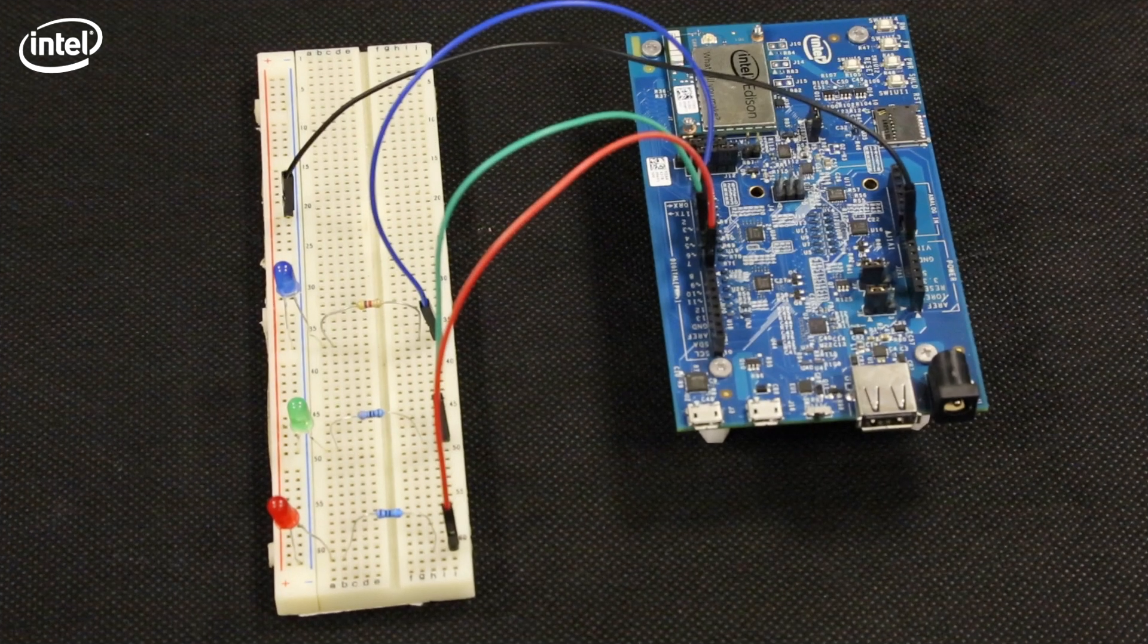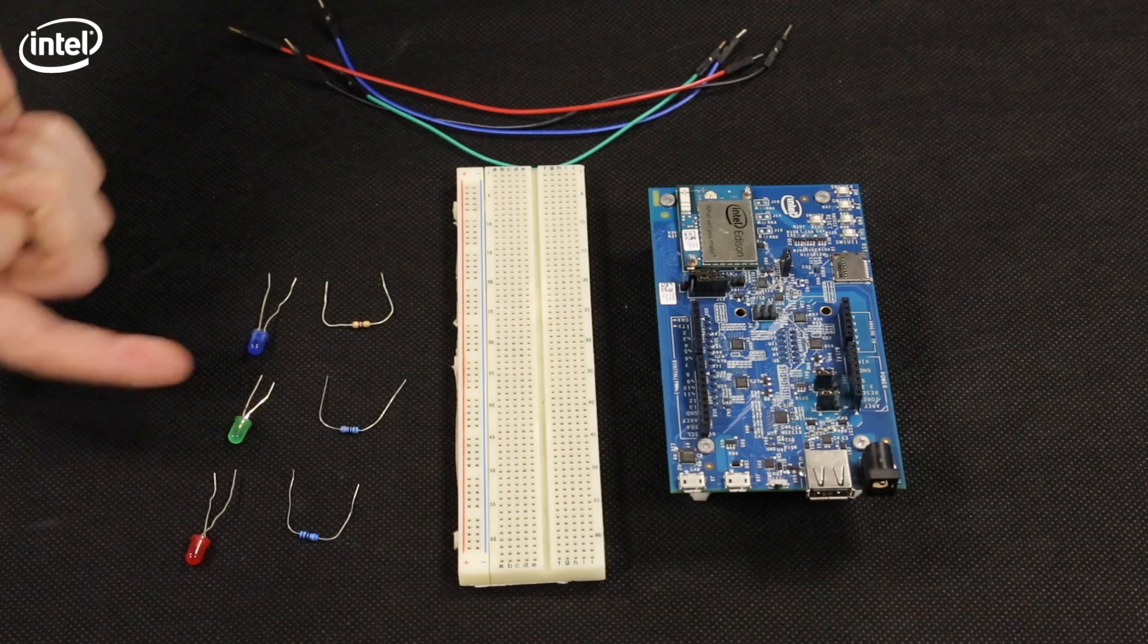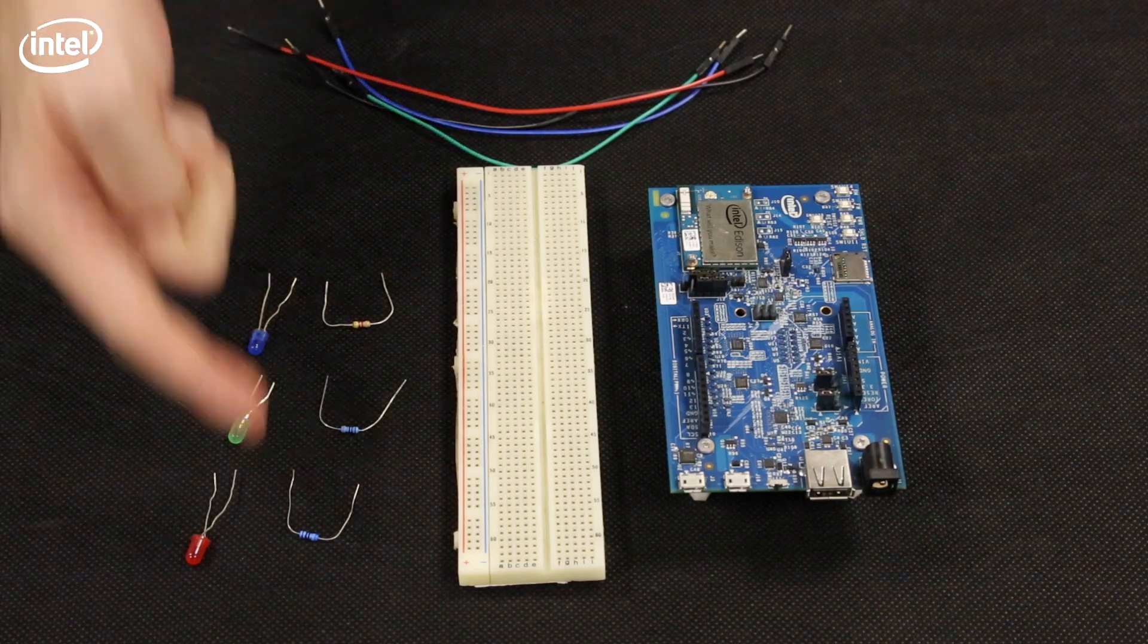For our first test we will connect three LEDs to test our Node.js inputs and outputs. We will have something like this at the end, so we need three different LEDs - red, green, and blue - with the resistance and also four cables.